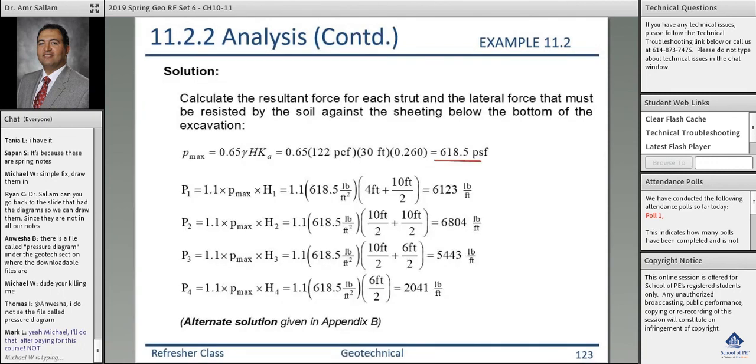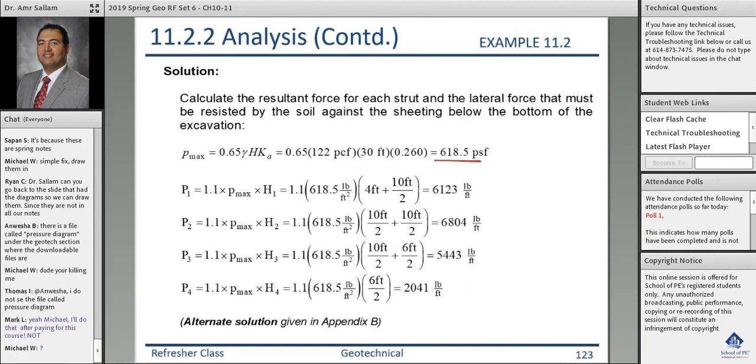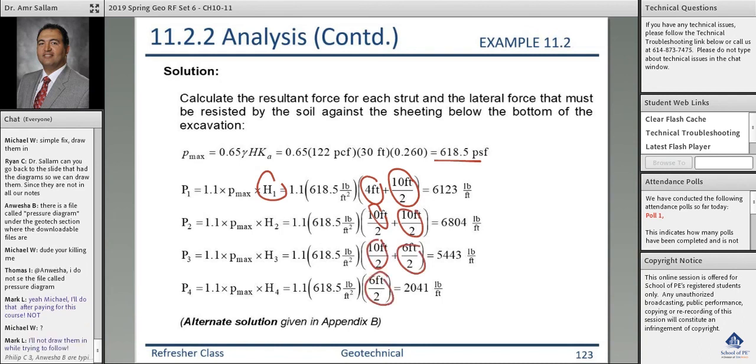So P_max 618, the first load 1.1 times the P_max times the area, its own contribution: four plus half of the five. Second one is five plus five. Third: three plus four. The last one, the soil is half of the three, two thousand something.